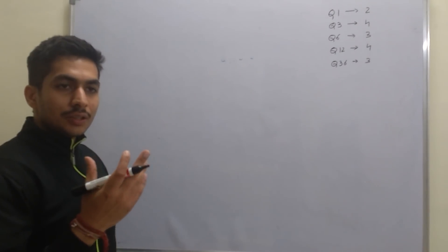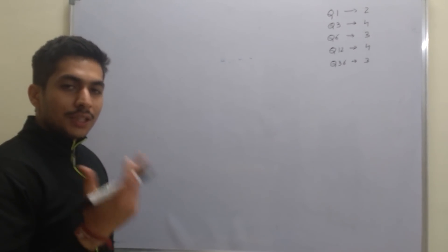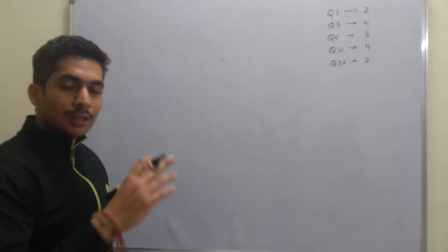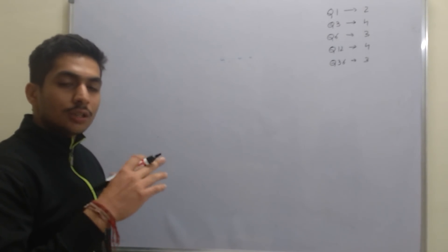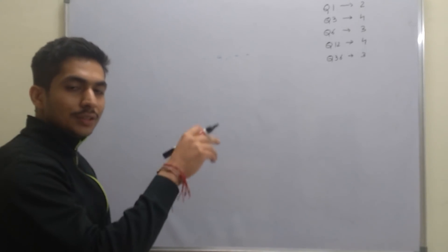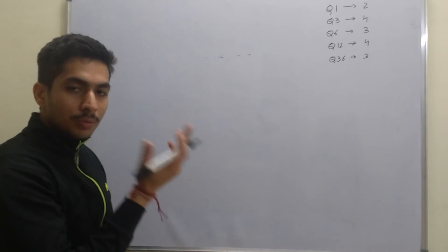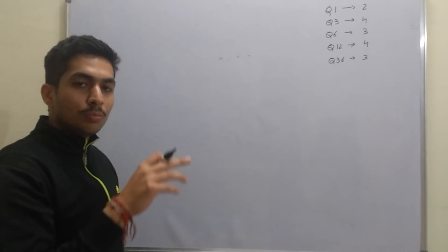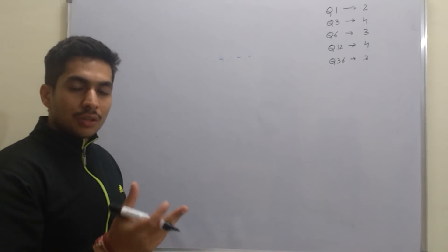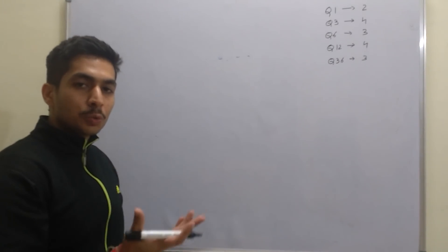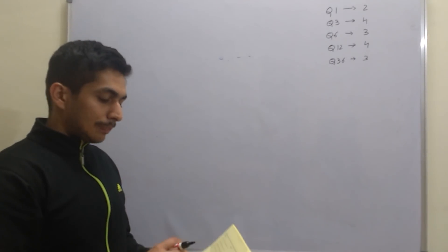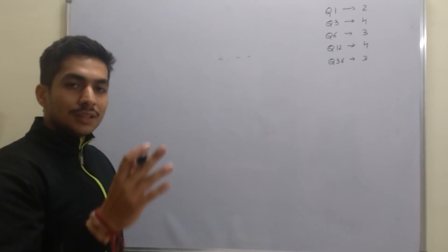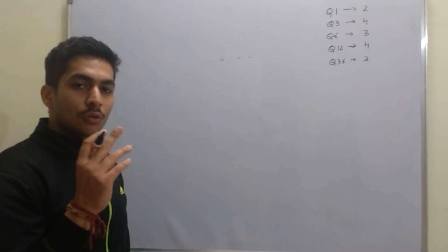A parallelepiped is a 3D shape where all the faces are in the form of a parallelogram. For comparison, in a cube all the faces are squares - that is a 3D structure where all faces are squares. Similarly, in this parallelepiped the faces are parallelograms. We have been given three vectors: vector a, b, and c.